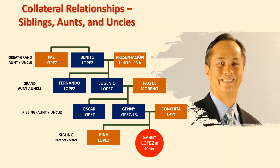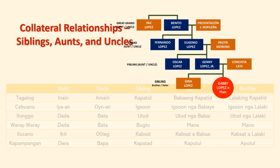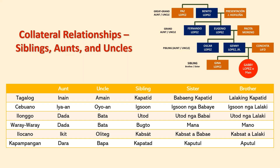Aunt in Tagalog is Inain, Iaan in Cebuano, Dada in both Ilonggo and Waray-Waray, Ikip in Ilocano, and Dara in Kapampangan. Uncle is Amain in Tagalog, Uyuan in Cebuano, Bata in both Ilonggo and Waray-Waray, Oliteg in Ilocano, and Bapa in Kapampangan. Sibling is Kapatid in Tagalog, Igsuon in Cebuano, Utod in Ilonggo, Bugto in Waray-Waray, Kabsat in Ilocano, and Kapatad in Kapampangan.